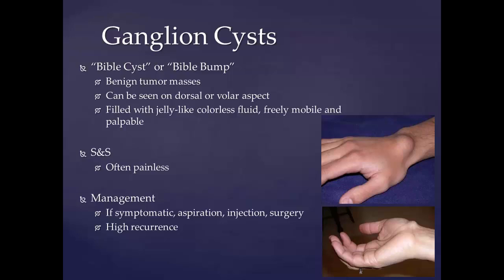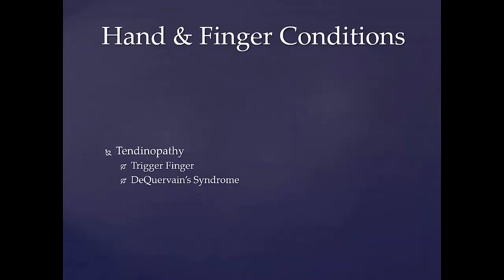One common historical method of treatment for a ganglion cyst was to strike the lump with a large heavy book, causing the cyst to rupture and drain into surrounding tissues. Historically, a Bible was the largest or only book in many households and was commonly used for this treatment, leading to the nicknames Bible bump or Gideon's disease. This treatment is now not recommended.